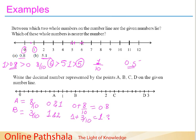Same for point C. C is 2 parts from 2, between 2 and 3. So it is 2 plus 2 by 10, that is 2.2.